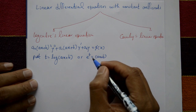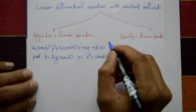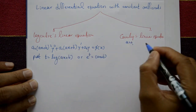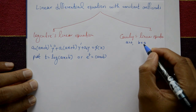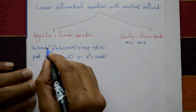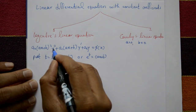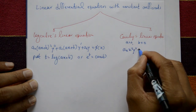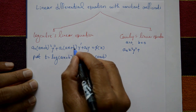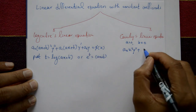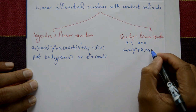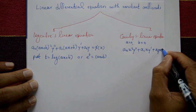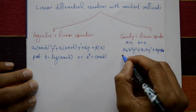For Cauchy's linear equation, you put a equal to 1 and b equal to 0 in Legendre's equation. This gives: a-naught times x-squared times y-double-dash, plus a1 times x times y-dash, plus a2 times y, is equal to phi of x. This is Cauchy's linear equation.